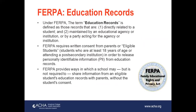What's an education record? Under FERPA, an education record is a record that is directly related to a student and is maintained by an educational agency or institution or by a party acting for that agency or institution. Under FERPA, there is the requirement of written consent from an eligible student — a student who has reached the age of majority, which is 18 years in most states and is attending a post-secondary institution — or consent from parents of a student who is still a minor, in order to release personally identifiable information, or PII, from educational records.